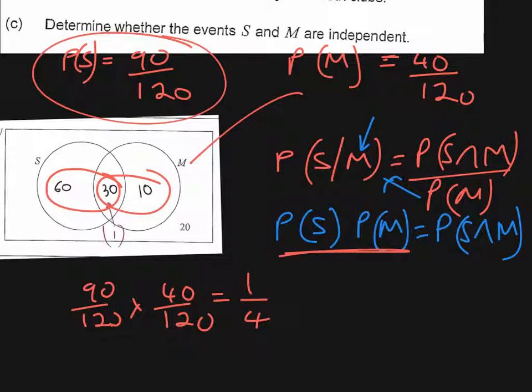Now if they are independent, what we should find is that if we take this value here, the probability of sport and music from the Venn diagram, we should also get that same value. So from the Venn diagram, we can see that the intersection S and music is 30. And if we do 30 over the total, which is 120, that also gives us a quarter.